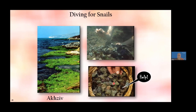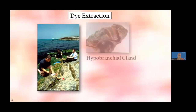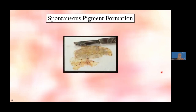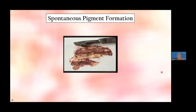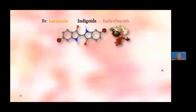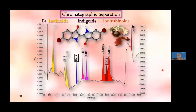After collecting a basket of snails from the northern Israeli coast, dye extractions are performed: the shell is broken to expose the hypobranchial gland. The secretion is initially colorless or white, then turns yellow in sunlight and oxygen, and eventually converts spontaneously into a reddish-purple or bluish-purple pigment — depending on the snail species. The chromatographic separation then provides a detailed picture of the pigment components.